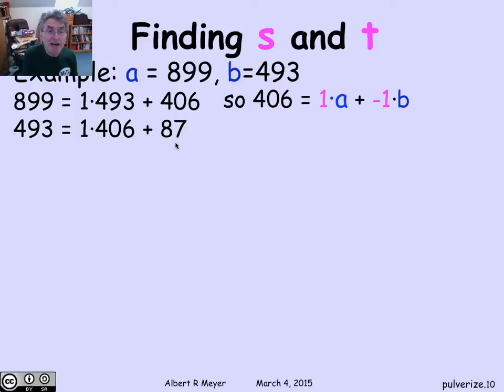What's next? Now that I've got 406 and 493, I'm supposed to take the remainder of 493 divided by 406. That's 87. In fact, 493 has a quotient of 1 times 406 plus 87. So that tells me that 87 is 493 minus 406. 87 is 1 times b minus 1 times 406. But 406 I know how to express as a linear combination of a and b. So let's replace the 406 by 1a plus minus 1b. And I wind up with minus 1a plus 2b. So there we are with the linear combination that expresses the next remainder, 87.